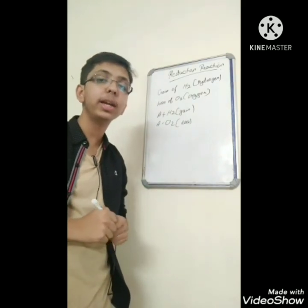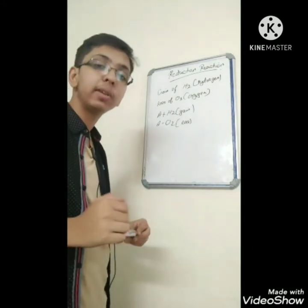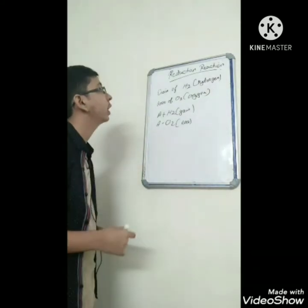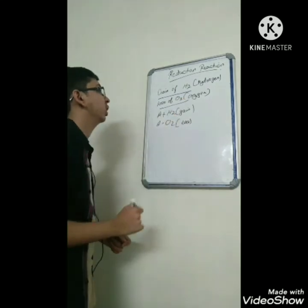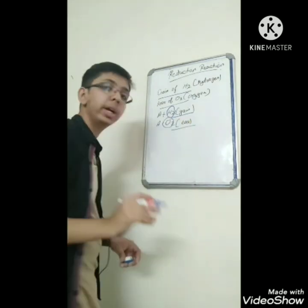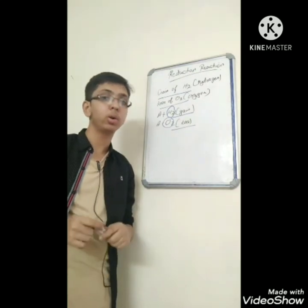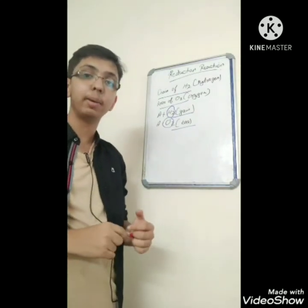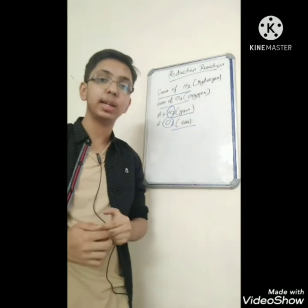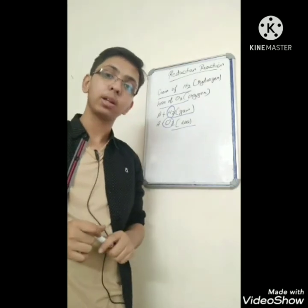Our last topic is reduction reaction. Reduction reaction is just the opposite of oxidation reaction. In oxidation we have gaining of oxygen and losing of hydrogen, whereas in reduction reaction there is gaining of hydrogen and losing of oxygen. In any equation where hydrogen is gained or oxygen is lost, that is known as reduction reaction. So today we have learnt about introduction, chemical reaction, how to balance chemical equations, combination reaction, decomposition reaction, displacement reaction, double displacement reaction, oxidation reaction, and reduction reaction. Thank you guys.